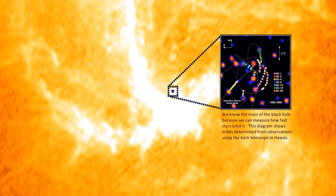We know the mass of the black hole because we can measure how fast stars orbit it. This diagram shows orbits determined from observations using the Keck telescope in Hawaii.